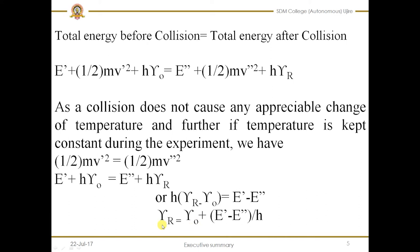From this equation we can again confirm the formation of Stokes, Anti-Stokes, and Rayleigh lines. Suppose E' = E'' — that is, the energy of the molecule before collision equals the energy after collision — then the term (E' − E'') becomes zero. So νR equals ν₀, meaning the frequency of the scattered light equals the frequency of the incident light — that is the formation of a Rayleigh line.